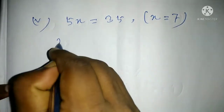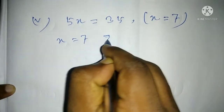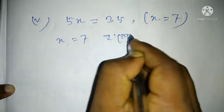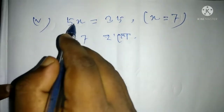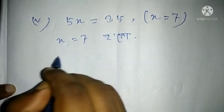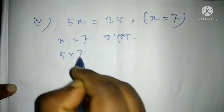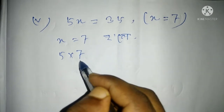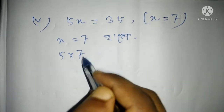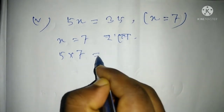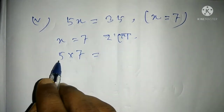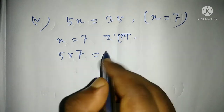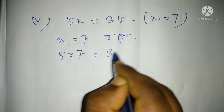These are my two and x equal to 7. 5 into 7 is also called x equal to 7. 5 into 7 equal to 35. My two and x equal to 7 have the answer.